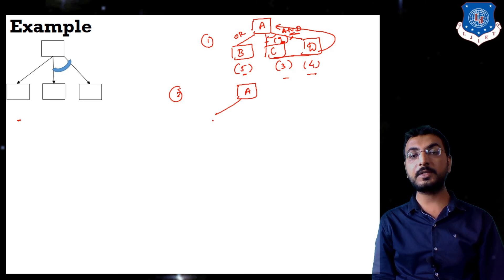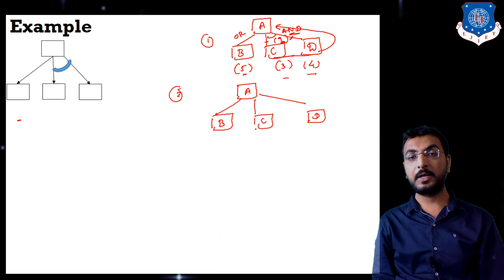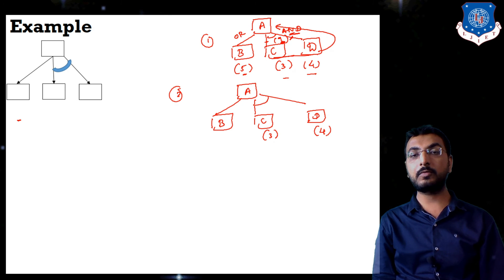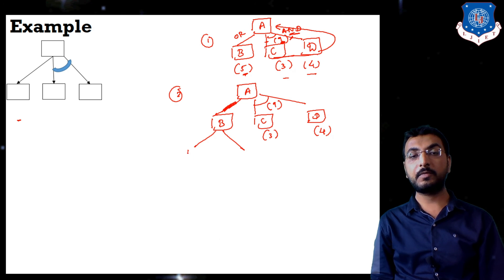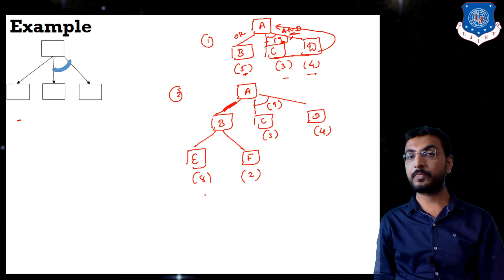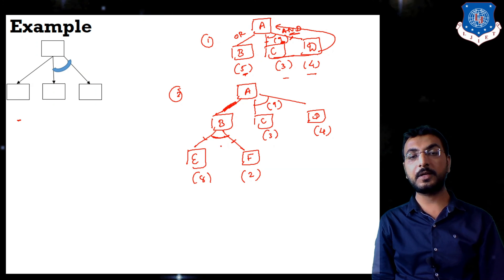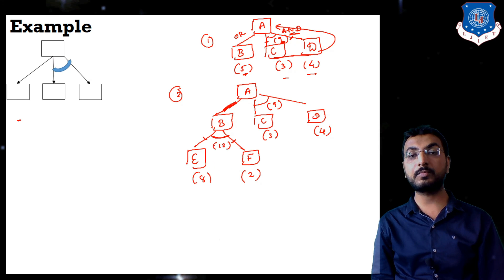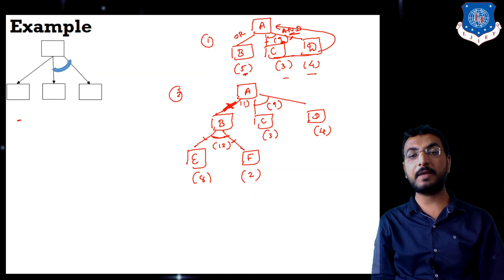In step 2 of the trace, we expand B. From B we get nodes E and F with heuristic values 8 and 2. If E and F are connected by AND, their cost is 8+2+1+1=12, so B's updated value is 12. Comparing with the AND path through C and D (value 9), we see 9 is lesser, so we continue expanding the C-D path.